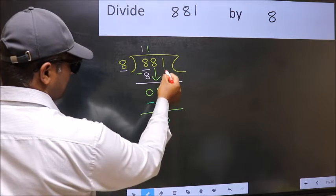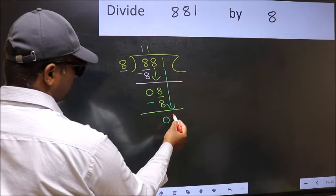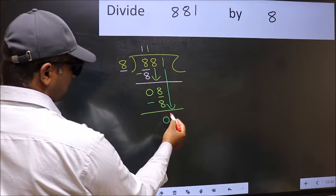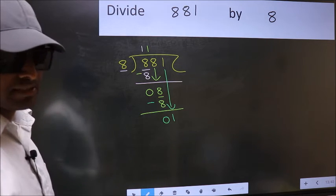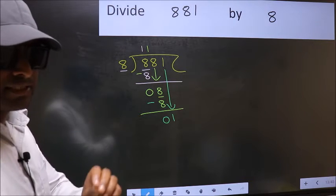After this, bring down the beside number. So 1 down. After this step, the mistake happens. And the mistake is this.